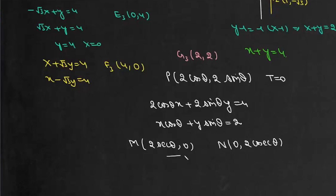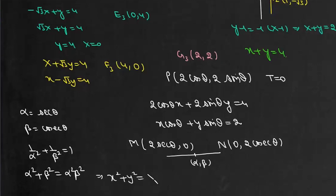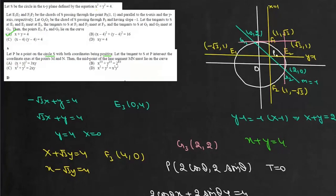Let the midpoint of MN be (α, β). Then α = secθ and β = cosecθ. Eliminating θ using sin²θ + cos²θ = 1, we get 1/α² + 1/β² = 1, which gives α² + β² = α²β². Replacing α with x and β with y, the required locus is x² + y² = x²y², which matches option D.